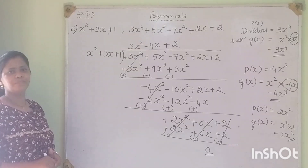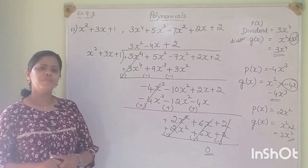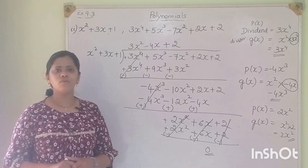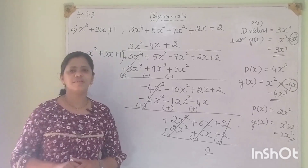Since the remainder is 0, we can say that the first polynomial x squared plus 3x plus 1 is the factor of the second polynomial. Hope you have understood. Let us move on to the third question.